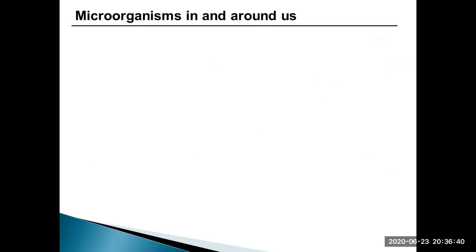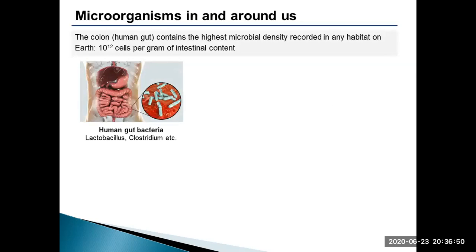Let's have a few snapshots of the microorganisms abundant within our body and in our surroundings. Interestingly, our colon contains the highest microbial density on earth. Bacteria like Lactobacillus, Clostridium and many other species dwell in our gastrointestinal tract.